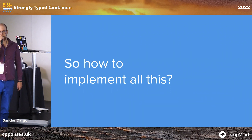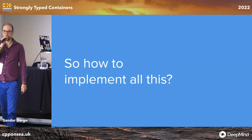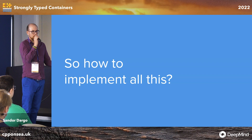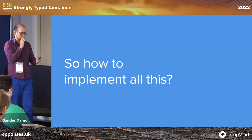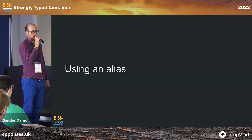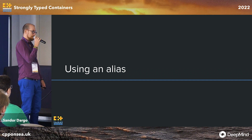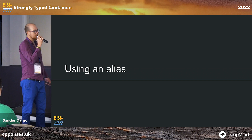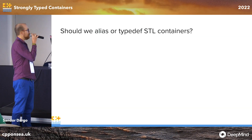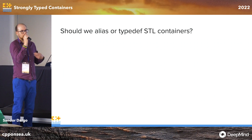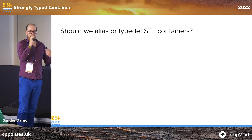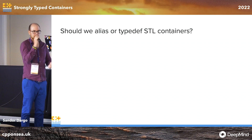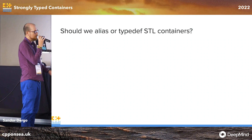Let's see how to implement all this. I'm going to show you four different options and we'll see the advantages and disadvantages for each. The first option — let's say half an option — is that we can use an alias. I say it's half an option because it's not going to give us a real strong type, but it's already a cheap step forward toward a more readable code base.